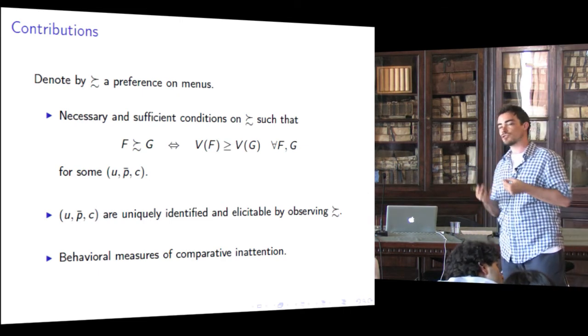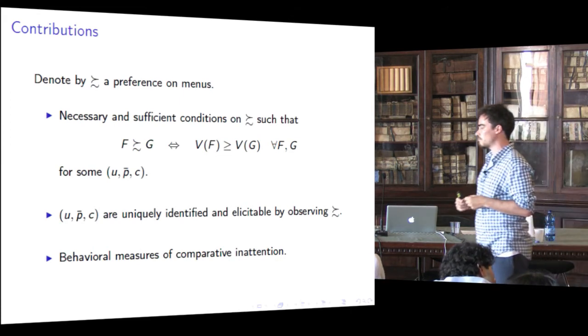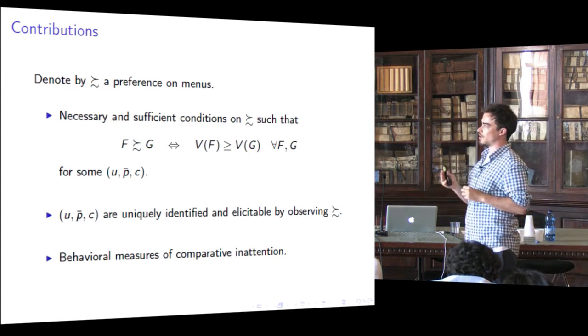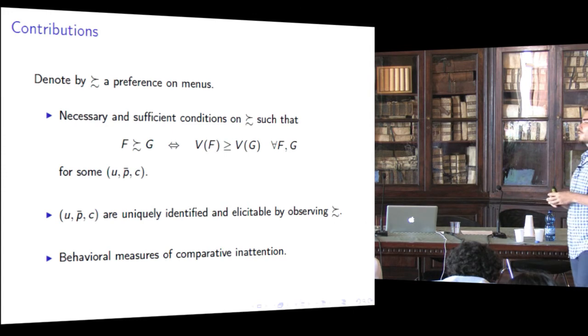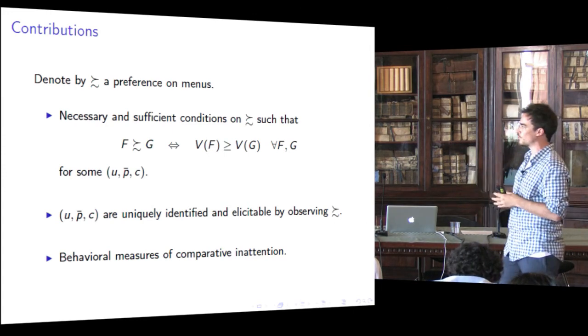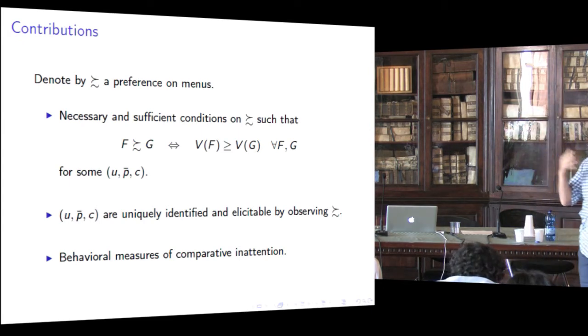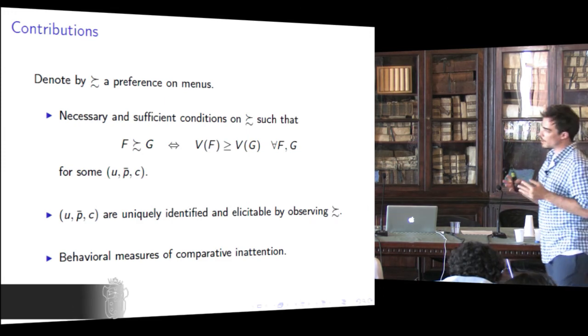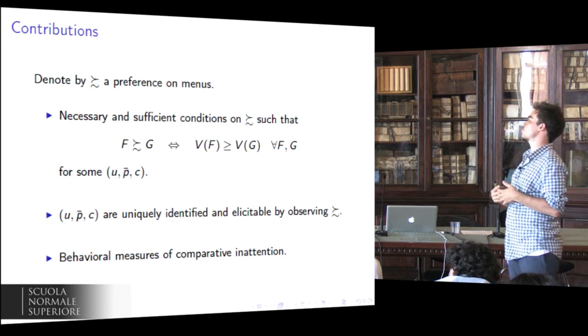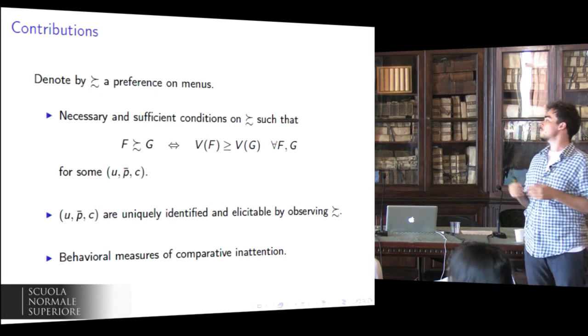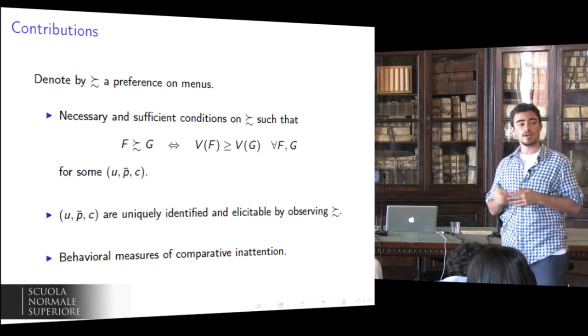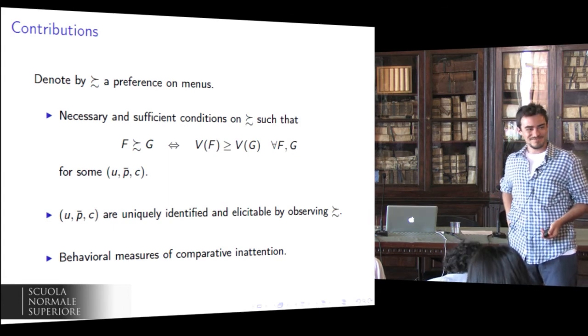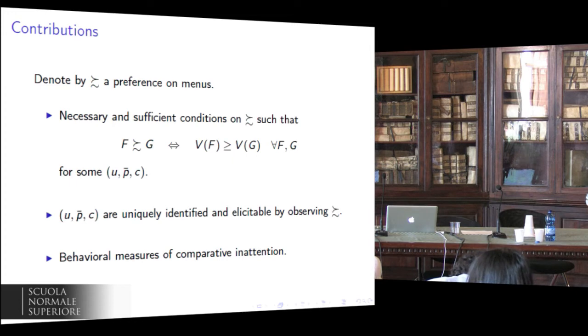To conclude, basically these are our answers to the four theoretical questions I posed before. Is information theory the right way to think about inattention? Here we have a set of axioms motivated in terms of attention and the representation which is information theoretic. Is it possible to falsify the rational inattention hypothesis? Here we have axioms which are falsifiable and observable. How to calibrate models of rational inattention? Here we have parameters that are uniquely identified and more or less easily elicitable by observing choices. And finally, our proposal for a notion of comparative inattention. Thank you.